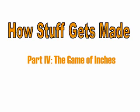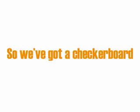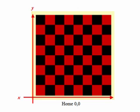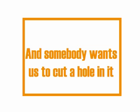Welcome to manufacturing math, lesson one, part four, in which we begin playing the game of inches. We've got a checkerboard — actually a piece of virtual manufacturing material onto which we're cutting a design in the shape of a checkerboard, because that's an easy reference point. It gives us a realistic grid, lets us lay out the x and y axes, and provides a framework for understanding.